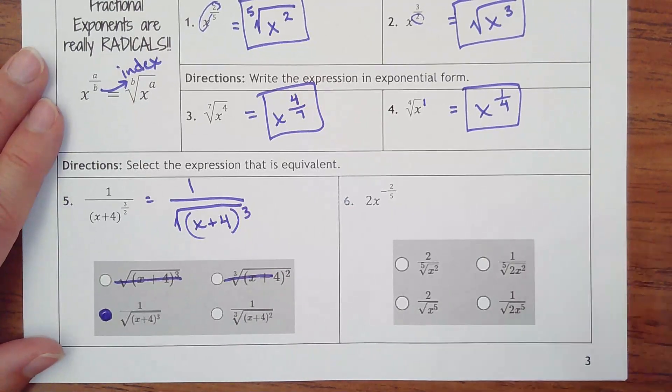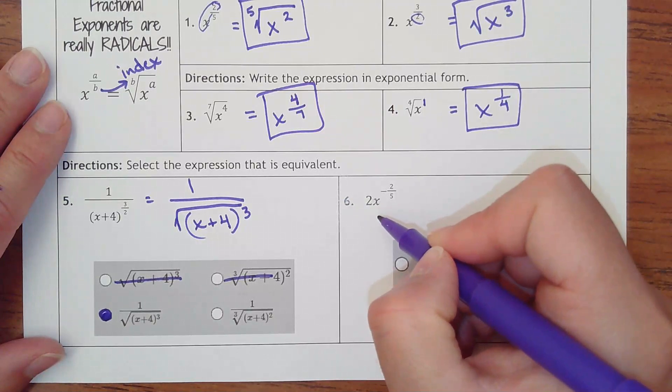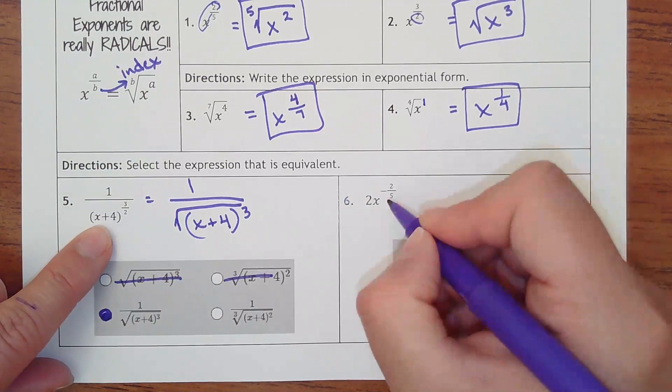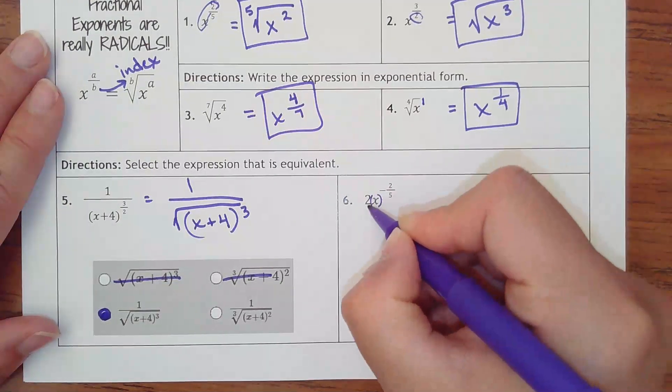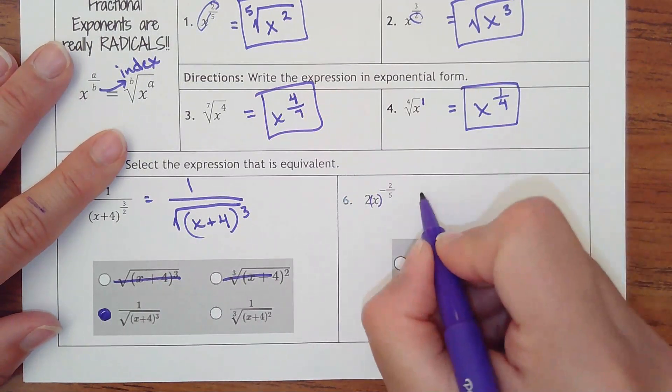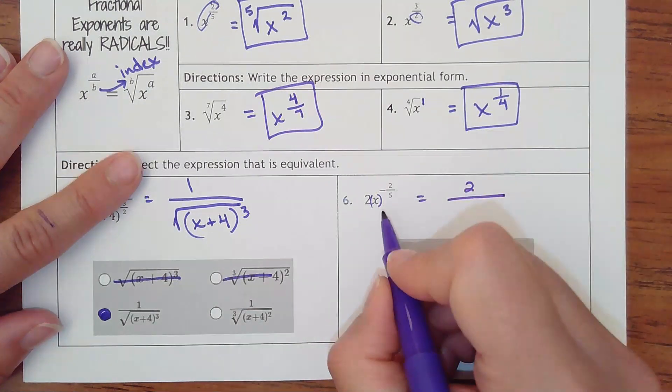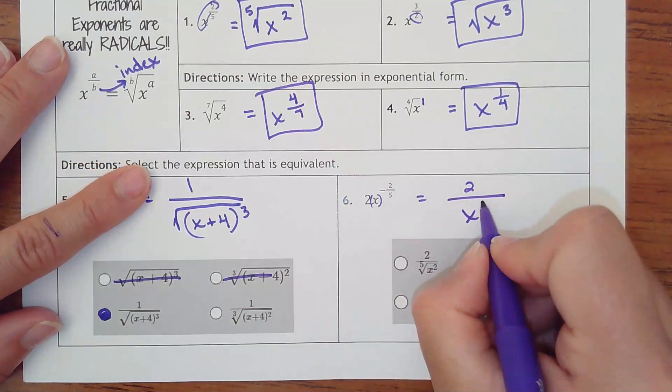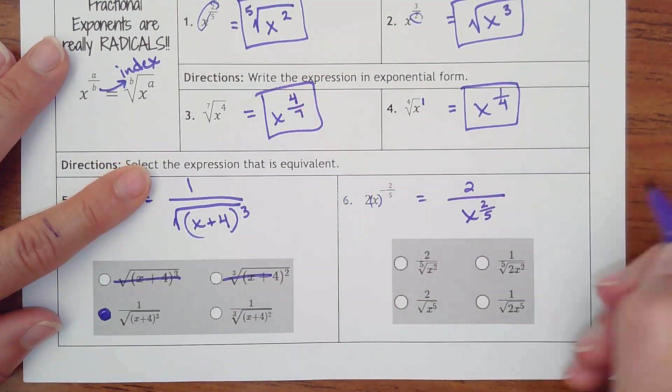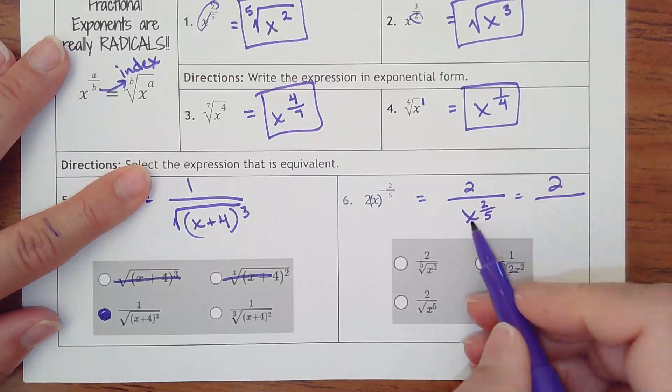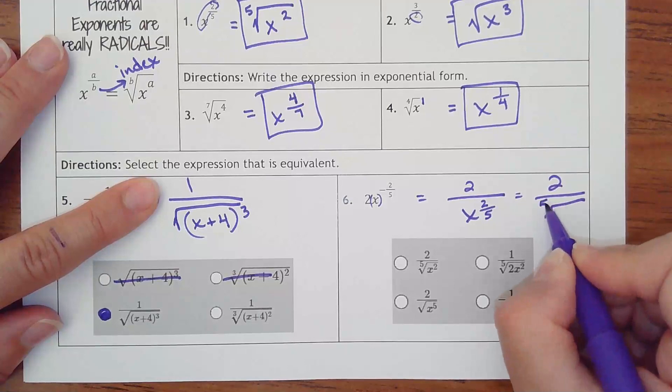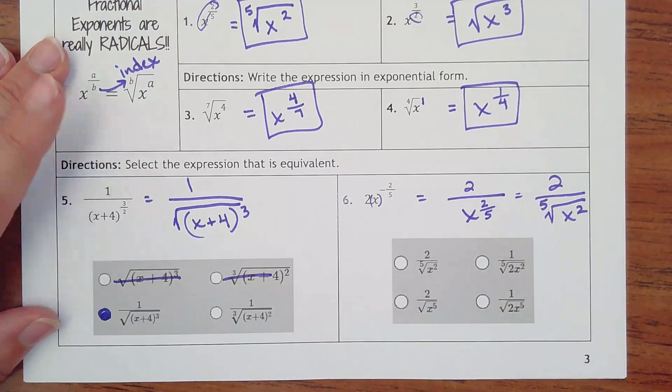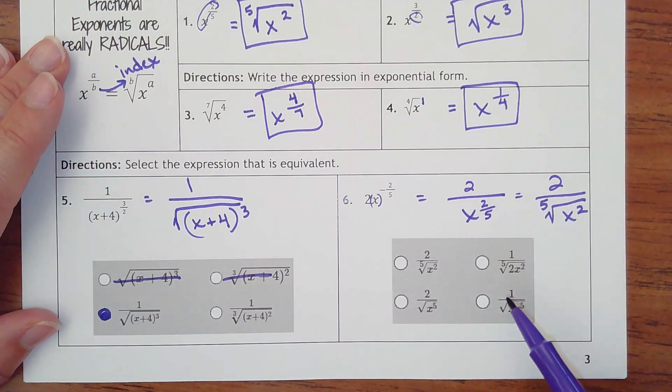And then number six, we've talked about how the parentheses make all the difference. This had x plus four grouped together. This has nothing grouped together, so the only thing that's got the power is the x. So two actually stays in the numerator. You drop down the x to the positive two-fifths, and then we want to rewrite that as a radical. So this would be the fifth root of x squared. So that would be right here.